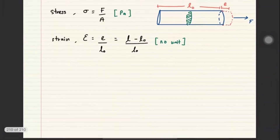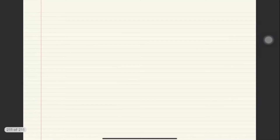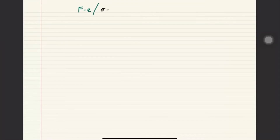We have a graph of force against extension, which is pretty much the same graph as stress against strain. The force-extension graph has F against E, and the stress-strain graph has sigma against epsilon. These two graphs have the same shape — the only difference is the labels on the axes. The discussion on this graph is pretty much the same.